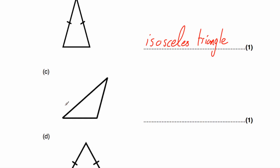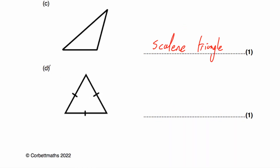In part C, we've got a triangle where it has three sides that have all got different lengths and each of the three angles are different sizes. So that's a scalene triangle. And finally, part D — we've got a triangle and each side has got a dash which shows they're the same length. So that's an equilateral triangle.